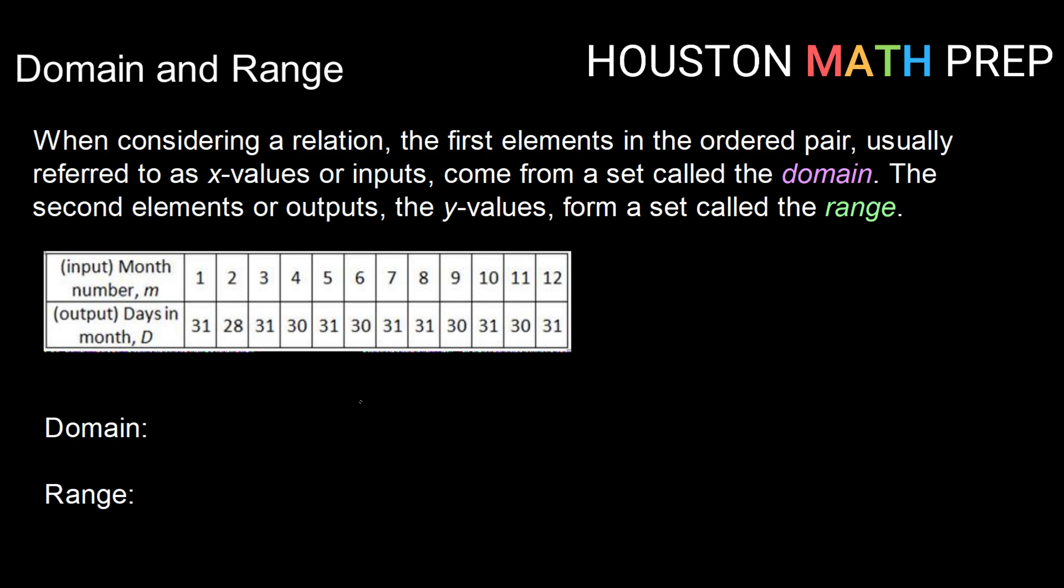The second element, or sometimes called the y-values, sometimes called the outputs, if we took all of those possible values, that would form a set called the range. So oftentimes with relations or with functions, we're interested in listing out or expressing the domain and the range, all the possible inputs and all the possible outputs.